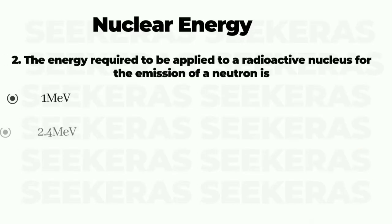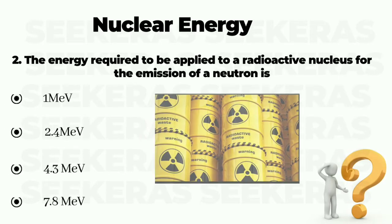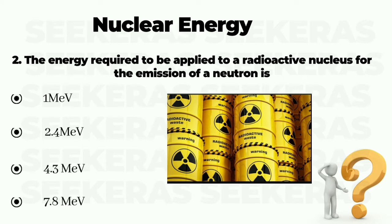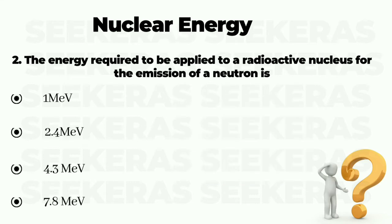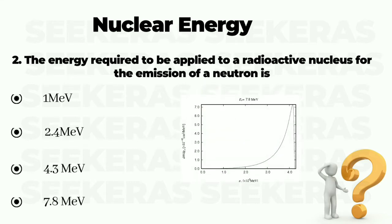Question number 2. The energy required to be applied to a radioactive nucleus for the emission of a neutron is: option A 1 mega electron volt, option B 2.4 mega electron volt, option C 4.3 mega electron volt, and option D 7.8 mega electron volt. The correct answer is option D, 7.8 mega electron volt.